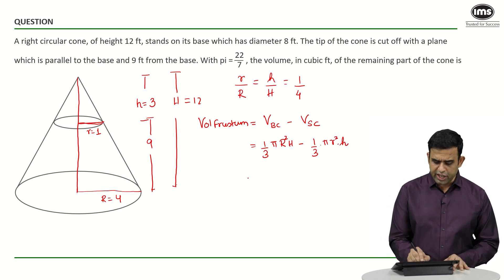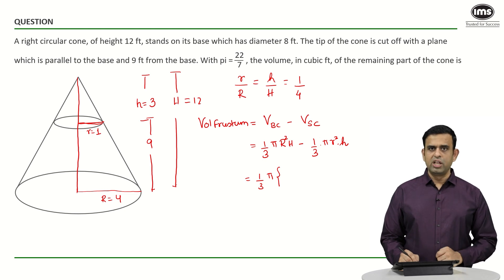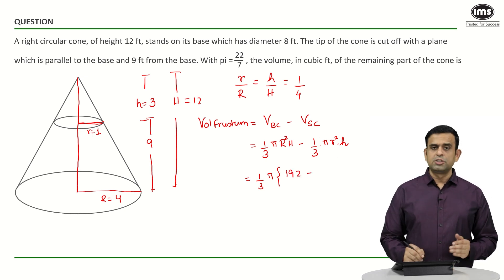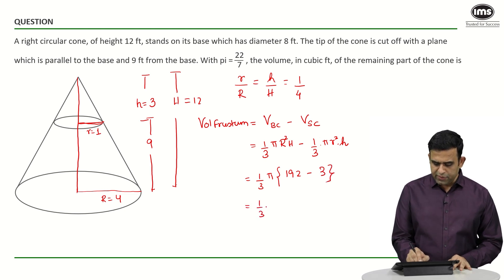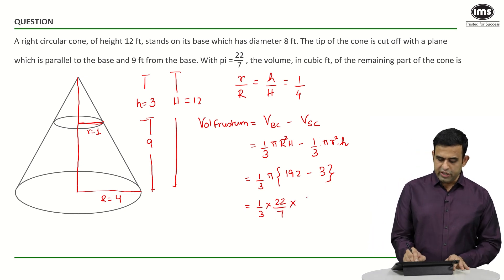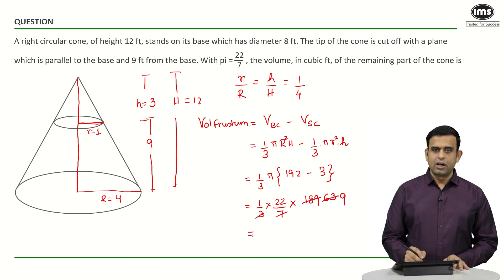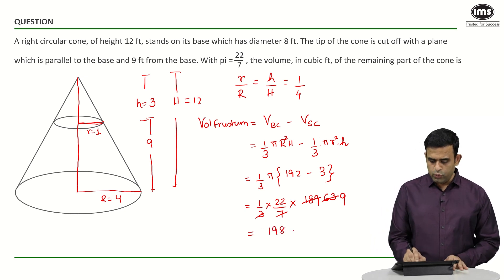Putting in the values with 1 by 3 pi as a common factor: capital R squared into H is 4 squared into 12, giving 16 into 12 which is 192. Small r squared into small h is 1 squared into 3, giving 3. So we have 1 by 3 into 22 by 7 into 192 minus 3, which is 189. Cancelling 3 gives 63, and 7 into 9 is 63, so the answer is 22 times 9, which is 198 cubic feet.